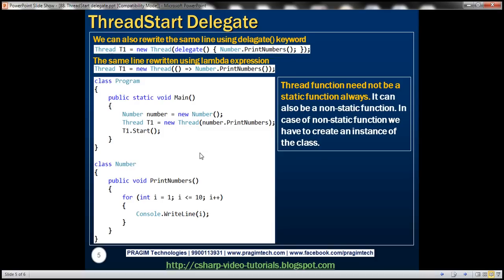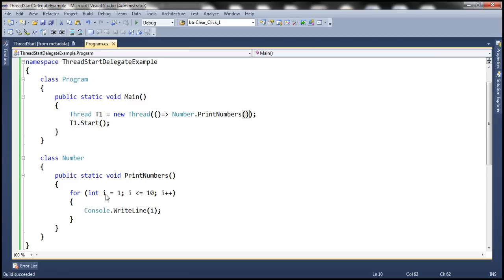Now, so far in this example, PrintNumbers has been a static function. Now thread function need not be a static function always. It can also be a non-static function. In case of non-static function, we have to create an instance of the class as you can see here, and then invoke the function on that instance. Let's actually look at that within the example.